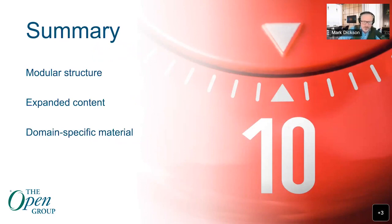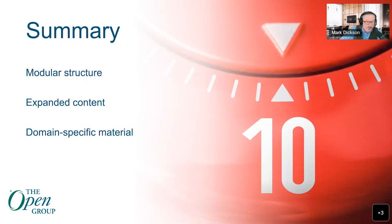So the summary — three things to remember. If you prefer to sleep through the rest of this presentation, remember these three things. The main features that characterize the 10th Edition of the TOGAF Standard and distinguish it from its predecessors are: its modular structure, expanded content, and domain-specific material. It's breadth and depth — two dimensions. The TOGAF standard now includes material that addresses specific contexts as part of the standard, whereas previously we published guides showing how to apply the standard in specific contexts.